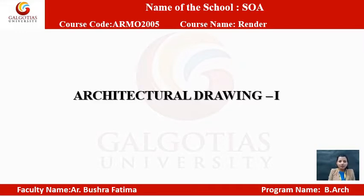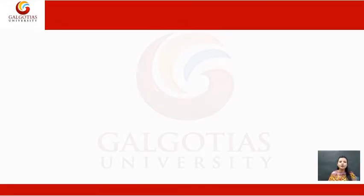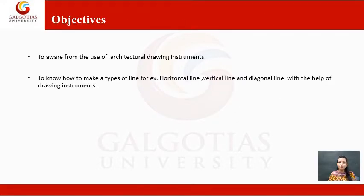Today we will start a new topic that is architectural drawing, which comes under your render module. The objectives of this lecture are to make you aware of the use of architectural drawing instruments like parallel bars, set squares, and to know how to make types of lines — for example, horizontal line, vertical line, diagonal line — with the help of drawing instruments like parallel bars, set squares, etc.